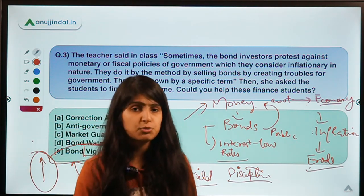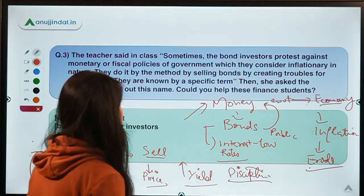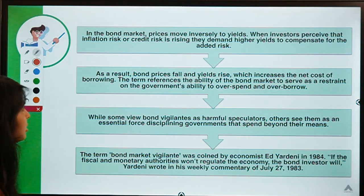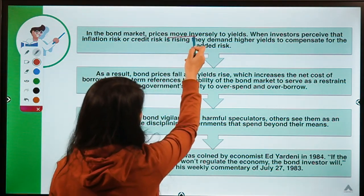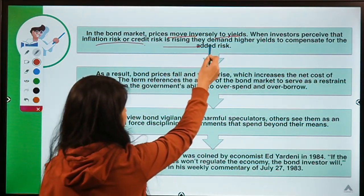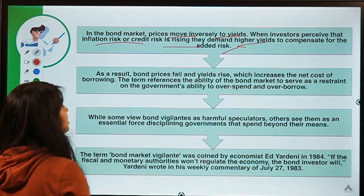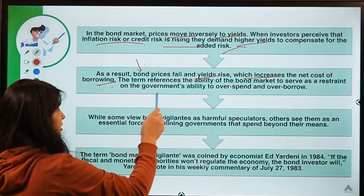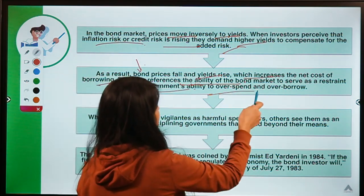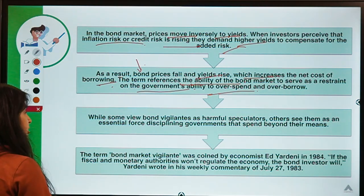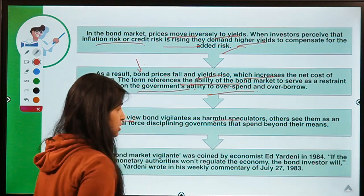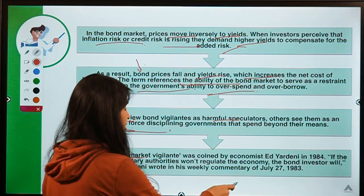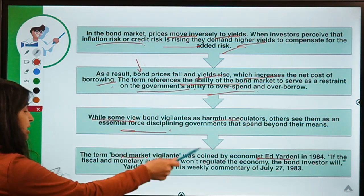Sometimes bond vigilantes can cause too much difficulty by not allowing governments to raise money at lower interest rates. Bond market prices move inversely to yields: when investors perceive that inflation or credit risk is rising, they demand higher yields to compensate for their added risk, causing bond prices to fall and yields to rise, increasing the net cost of borrowing for government. The term references the ability of the bond market to serve as a restraint on government's ability to overspend and over-borrow.